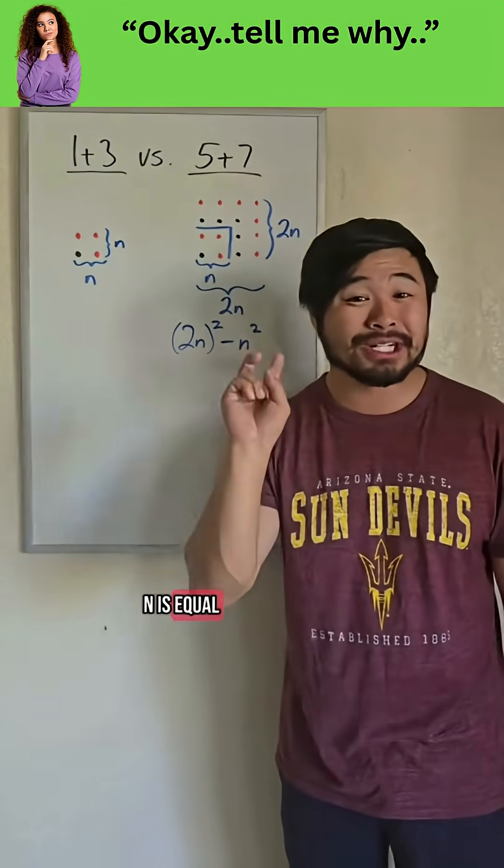Now, what about the sum of the next n positive odd numbers? Well, let's take a look at the example where n is equal to two. So we're looking at the sum of the first two odd numbers and the next two odd numbers.